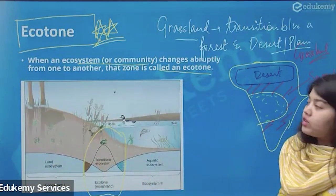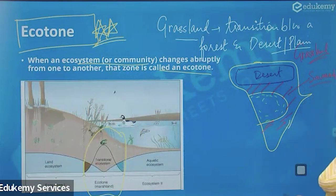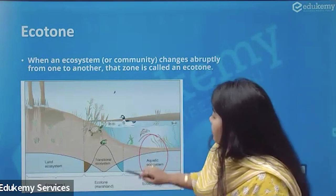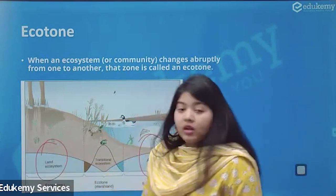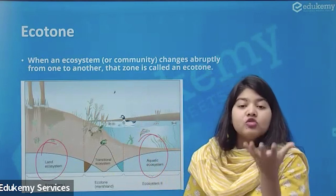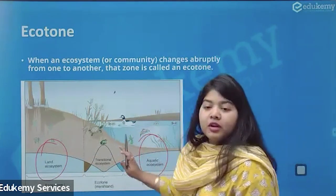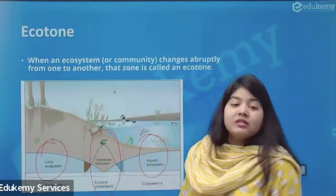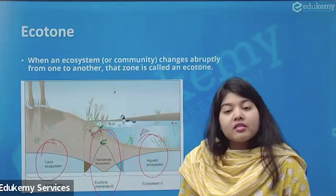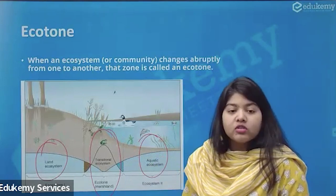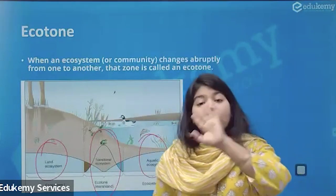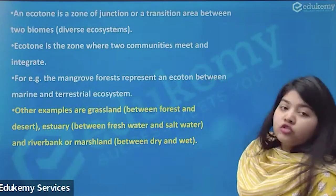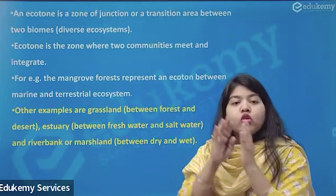Another example of transition: if I have an aquatic ecosystem here and a land ecosystem here, marshes, dal lakes, and swamps are nothing but the transition between land and water. I have very specialized species in this region, and this region is called the ecotone region. Any region which is a transition between two completely different ecosystems is called an ecotone.